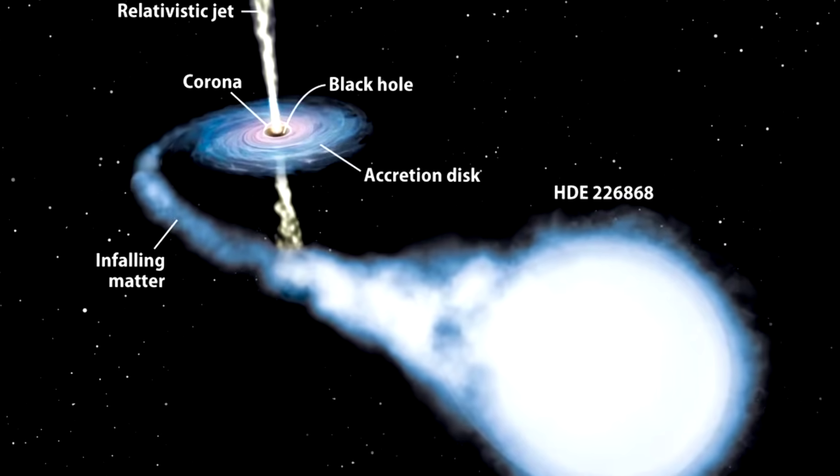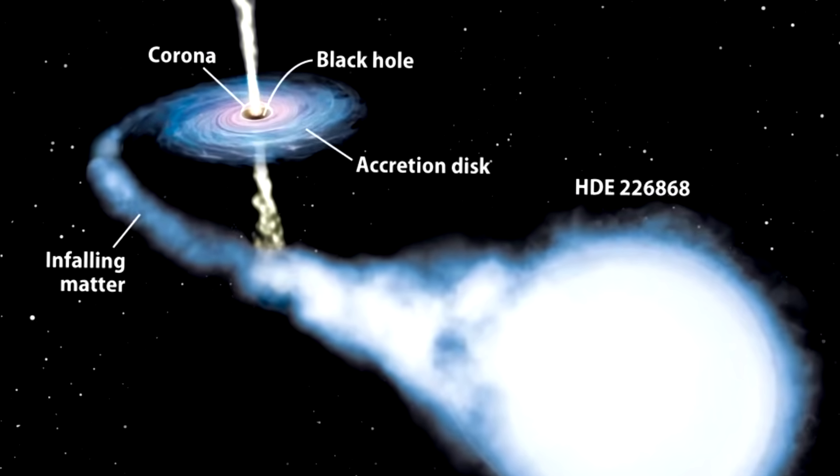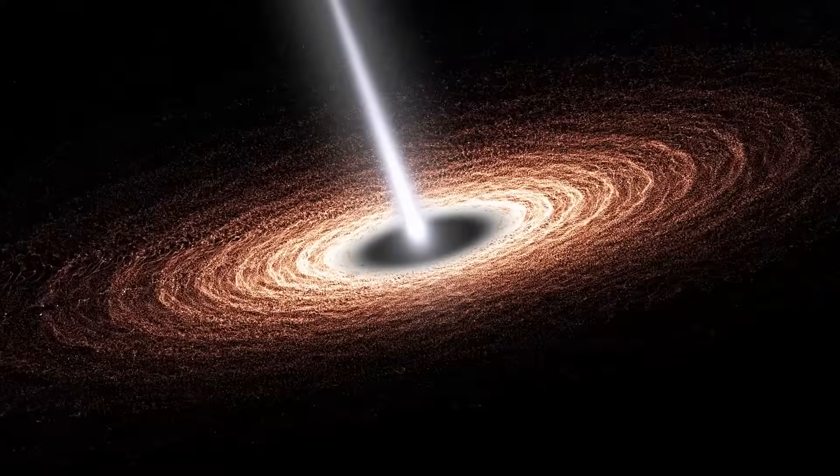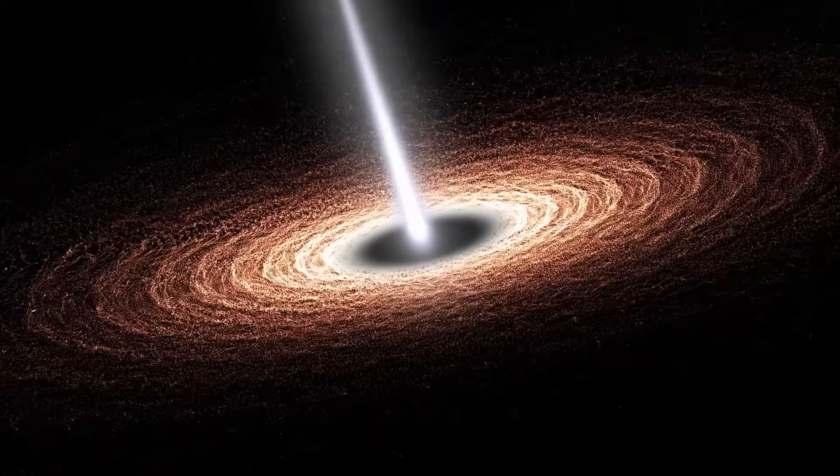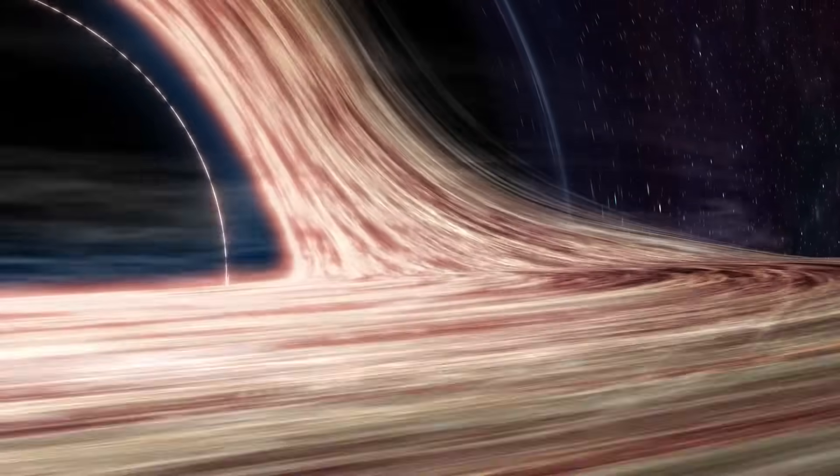Located about 6,000 light-years away, Cygnus X-1 is a heavyweight in the cosmic arena, an incredibly dense object with gravity so extreme that anything crossing its boundary, known as the event horizon, is lost forever.